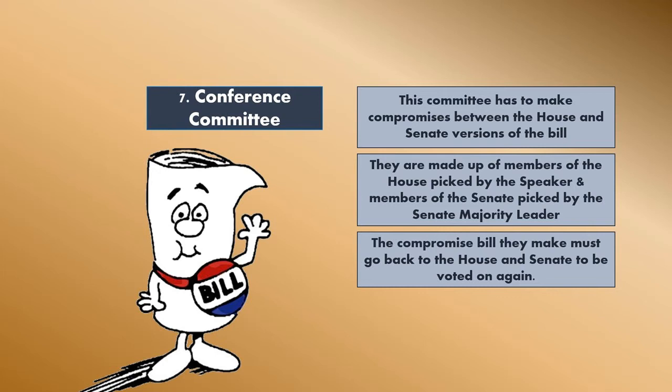What they have to do is make a compromise version of the bill that can go back to the House and the Senate to be voted on. For example, if the House passed a law that says paint every building red, and the Senate passed a law that says paint every building blue, they've passed similar versions of a bill about painting buildings but they'll have to come to a compromise on the details. In this case, we would hope they would be able to say, let's paint every building purple.